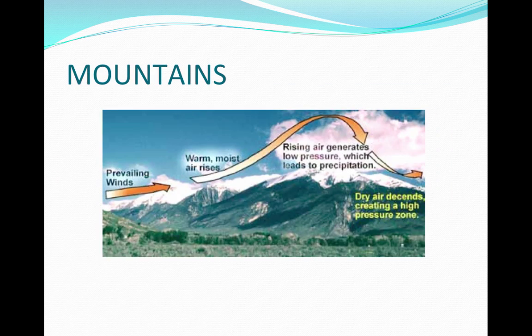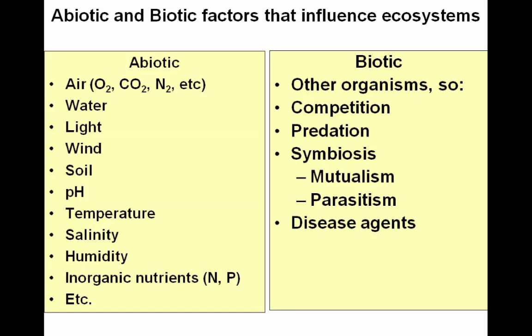Mountains affect airflow over land. As air rises over mountains, it cools and releases precipitation. On the other side, the cool, dry air descends and absorbs moisture, often creating deserts. Ecosystems are made of biotic (living) and abiotic (nonliving) parts, and both can affect the microclimate.